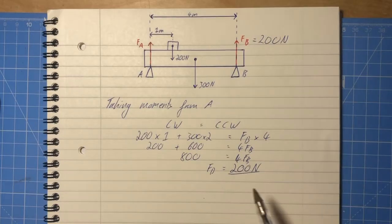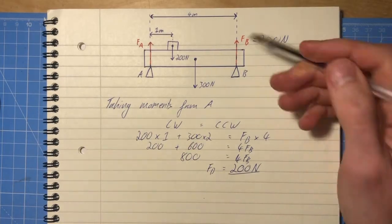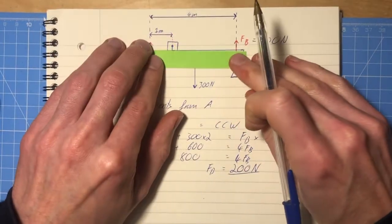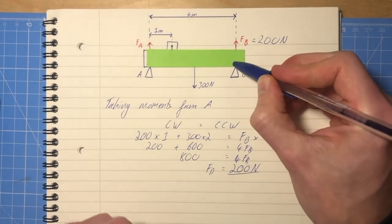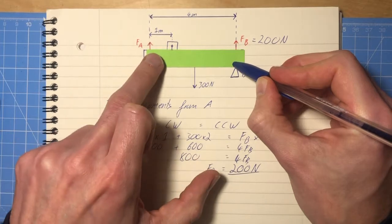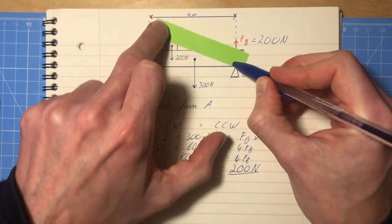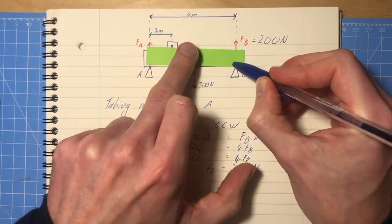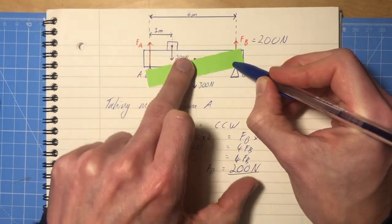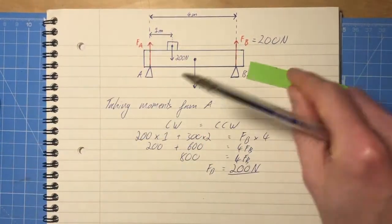Let's do the same thing, but this time we're going to take moments about B. So again, that means if we take moments about B, we're imagining that this is a pivot, and that FA is pushing it up, and moving it clockwise, and then these two forces are pulling it this way, and moving it counter-clockwise, anti-clockwise, however you want to say it.